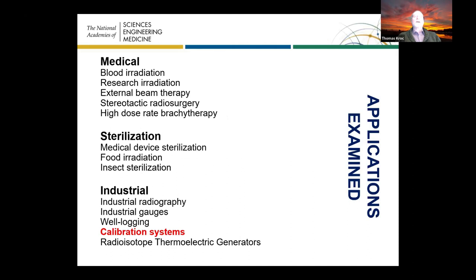We looked at three main categories: medical, industrial sterilization, and other industrial uses. Medical includes blood irradiation, external beam radiotherapy, stereotactic radiotherapy, and high-dose-rate brachytherapy. For sterilization, we looked at medical device sterilization, food irradiation, and the sterile insect technique. Industrial included industrial radiography, industrial gauges, well logging, radioisotope thermoelectric generators, and — pertinent to this group — calibration systems.